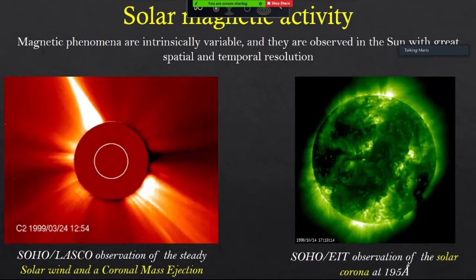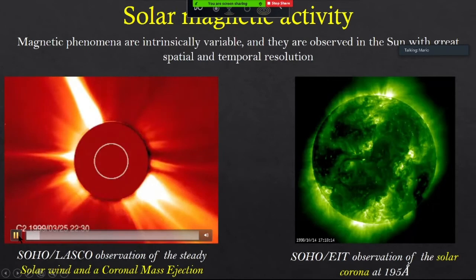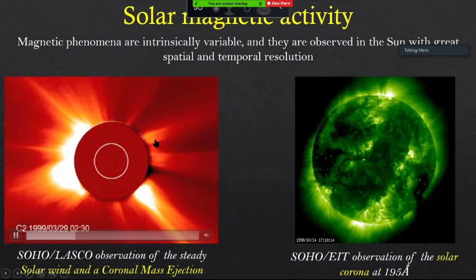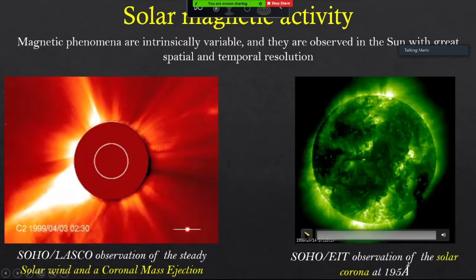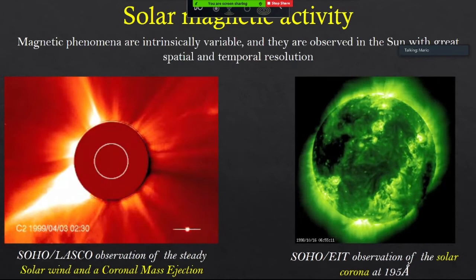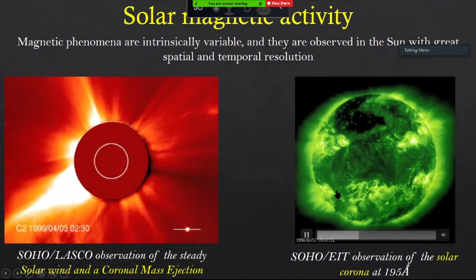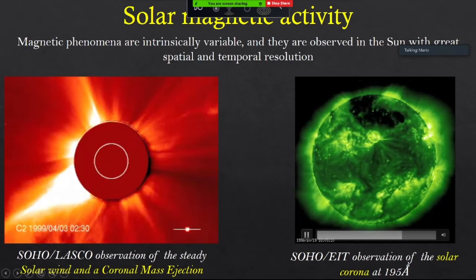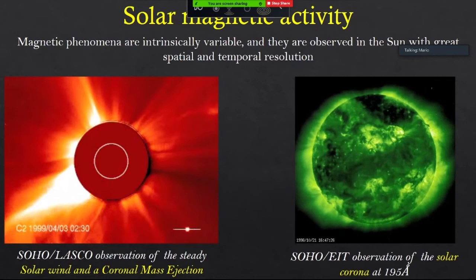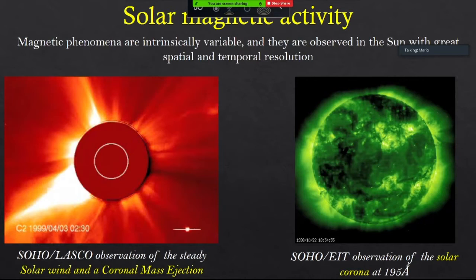There are several phenomena we continuously observe in the Sun, like the solar wind — a steady loss of material from the Sun with very intense ejections of mass called coronal mass ejections. We also know the Sun hosts a solar corona with plasma at temperatures of millions of degrees. These are images made by SOHO showing the solar corona in EUV, where we can appreciate that the corona is not homogeneous — it is made of very bright regions called active regions and very dark regions called coronal holes.